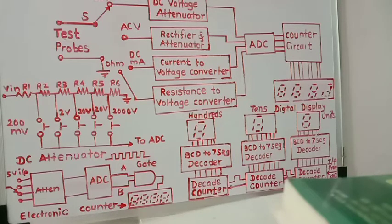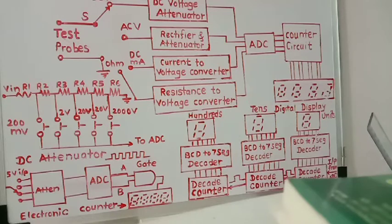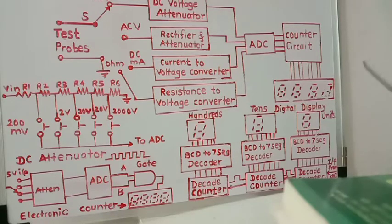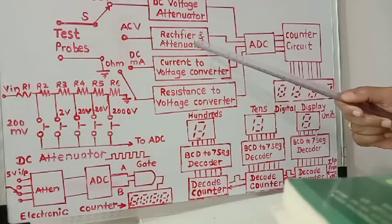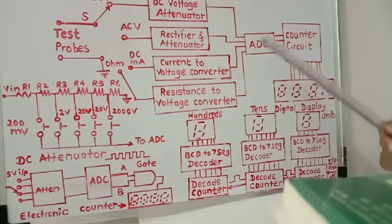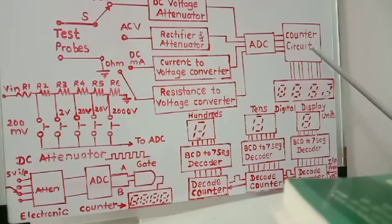This digital multimeter consists of an AC/DC attenuator, a current to voltage converter, a resistance to voltage converter, an analog to digital converter, and an electronic counter.